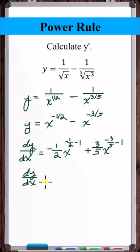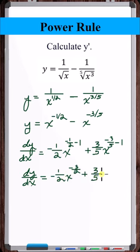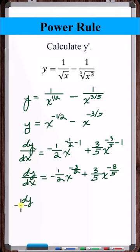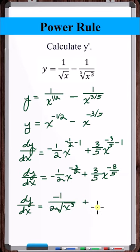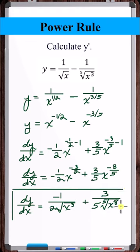And now, just simplify. So, that's the derivative, but we can put it back into a form like this to clean up the final answer. And that's the final answer.